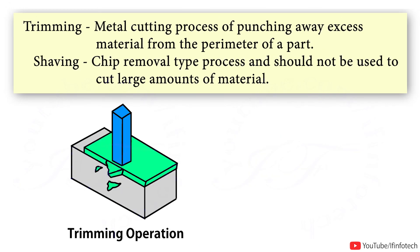Trimming is a metal cutting process of punching away excessive material from the perimeter of a part, as shown in the figure.